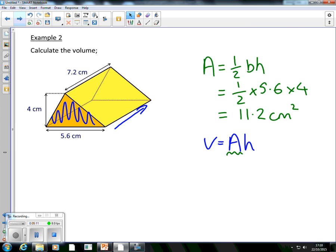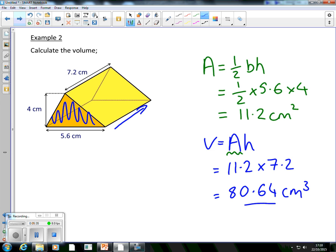Now we know what that area is, so now we can use it. The area is 11.2. The height, with regards to the volume, is how far that cross section travels. So it's going to be 11.2 multiplied by 7.2, which gives us 80.64 volume, so centimeters cubed. That's the next step. That's what we're going to have to do.